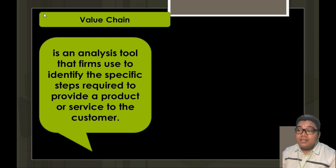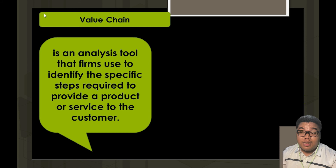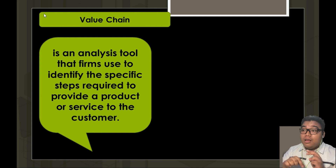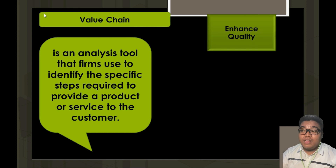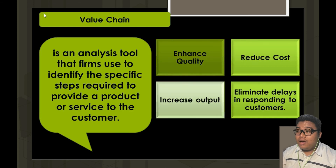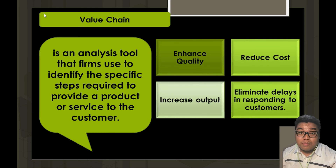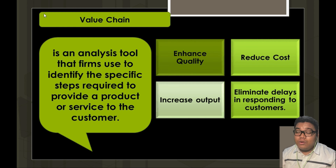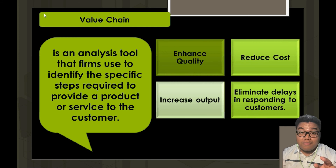Value chain is an analysis tool that firms use to identify the specific steps required to provide a product or service to the customer. It is the chain of activities in which the organization is engaged that adds value to the product. By analyzing the value chain, we are able to enhance quality, reduce costs, increase output, and eliminate delays in responding to customers, by identifying activities that add value and minimizing those that do not.